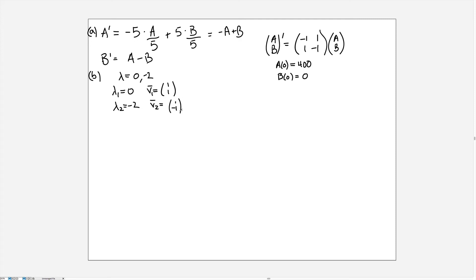So the general solution will be (a, b) equals c1·e^(0·t)·(1, 1) plus c2·e^(-2t)·(1, -1). Because e to the zero is just one, we can rewrite that more simply as c1·(1, 1) plus c2·e^(-2t)·(1, -1). And I trust that you can calculate those eigenvalues and eigenvectors on your own.